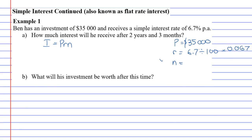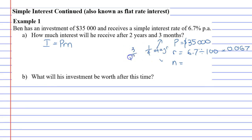Next is N, which is the number of time periods. It says two years and three months, and we need to put this in years. Three months is one quarter of a year — the way I know that is if I look at three months out of 12 months, that's the same as a quarter. So N is two and a quarter, since it has to be in years. It's better if you write it as a decimal, so 2.25 for N.